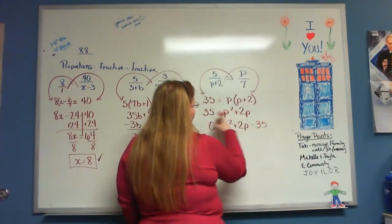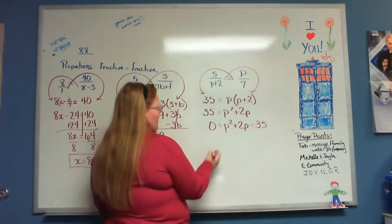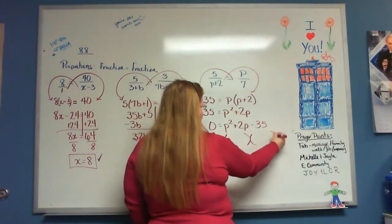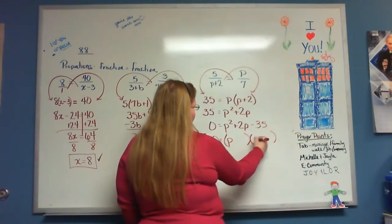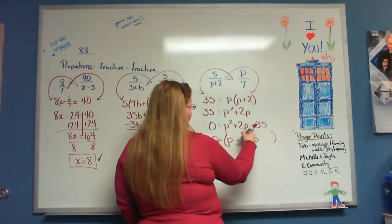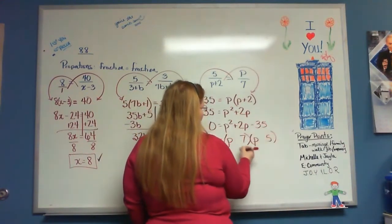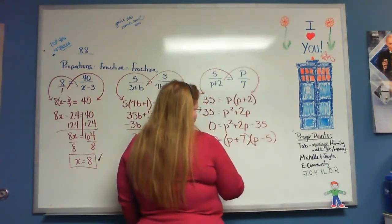Minus 35, because we moved it to the other side. Now I get to factor. Do this and multiply to give you 35 and subtract to give you 2. That's right. 7 and 5. Plus 7 minus 5.